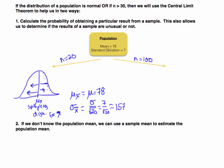How are we going to use that? What if I get a sample mean of 87? If 87 is an observation, I know the mean is 78 and the standard deviation of the sampling distribution is 1.57. I can determine what's the probability of getting a sample mean of 87. Just like we calculated probabilities with the normal distribution, I'm going to use the mean and the standard error to calculate Z scores.